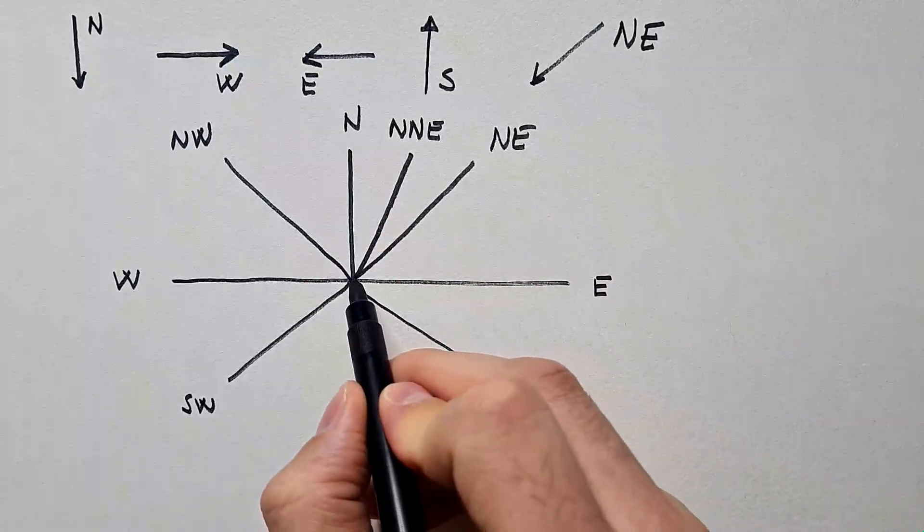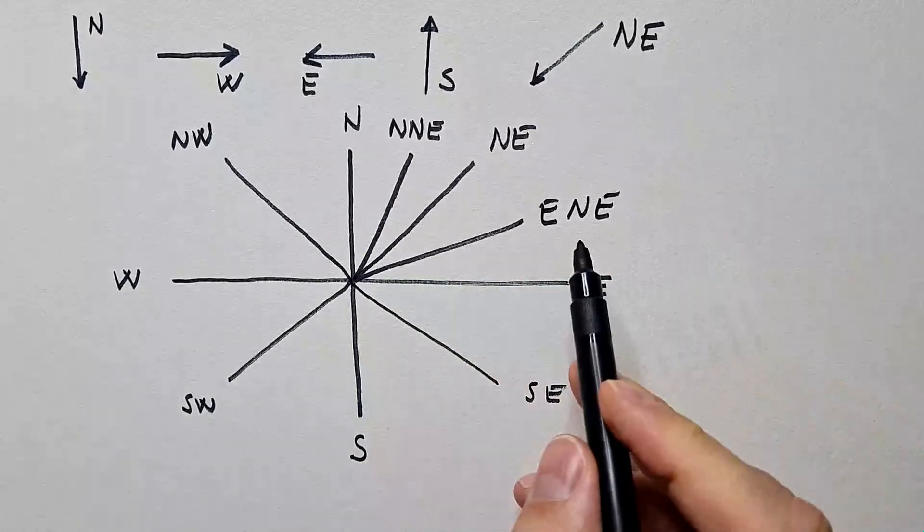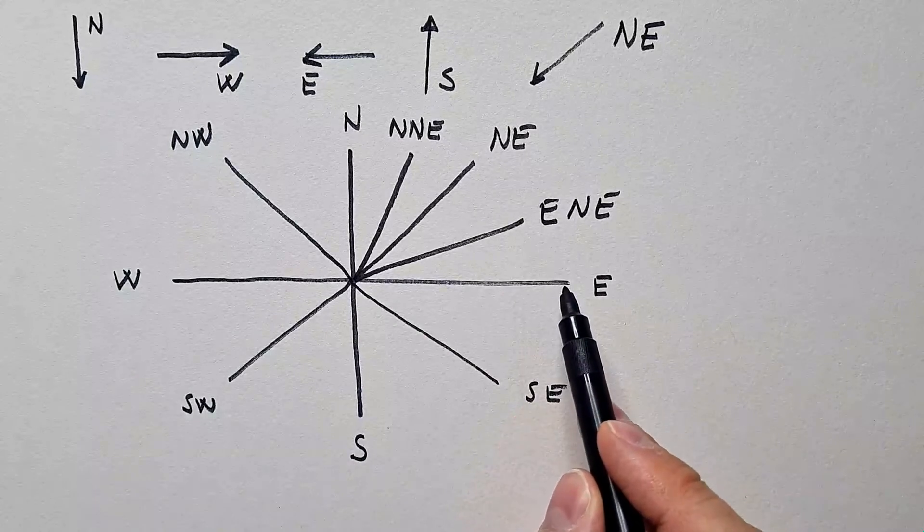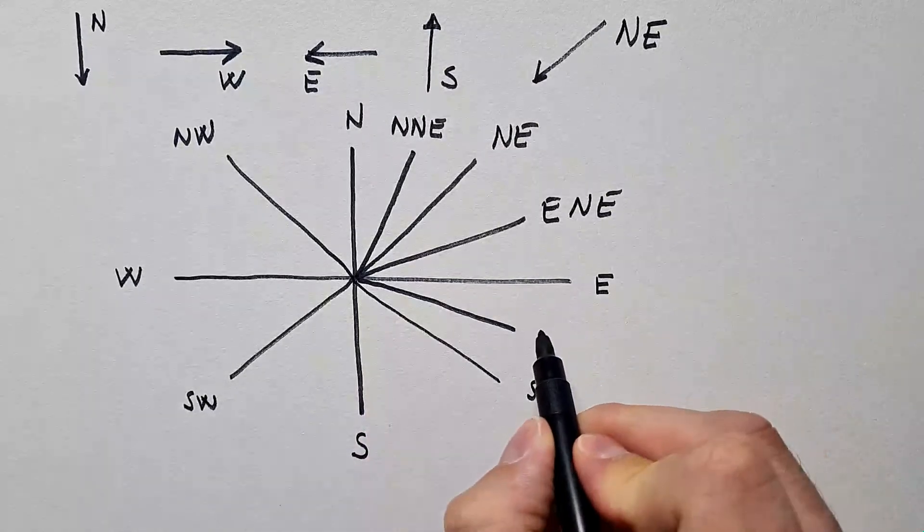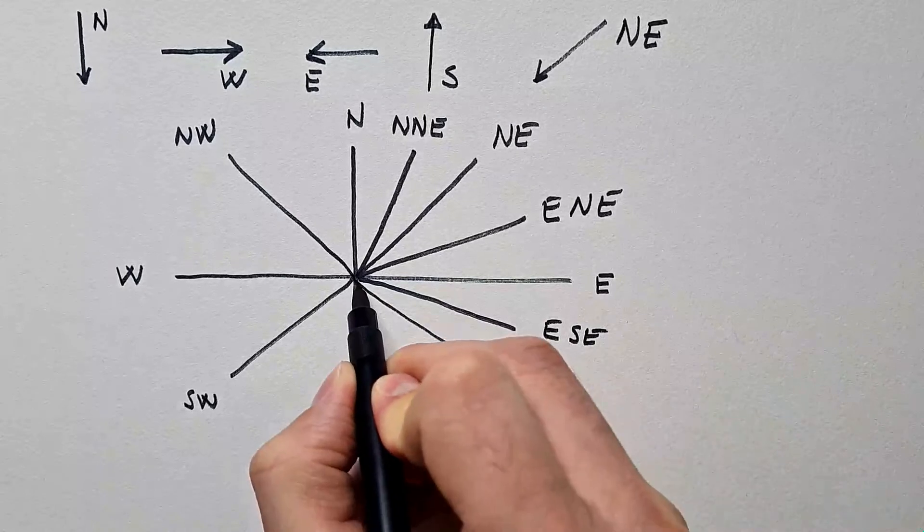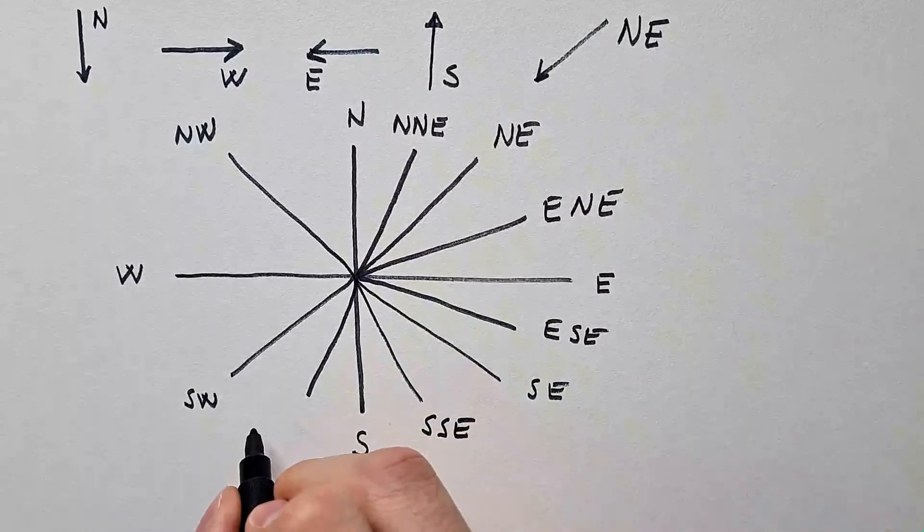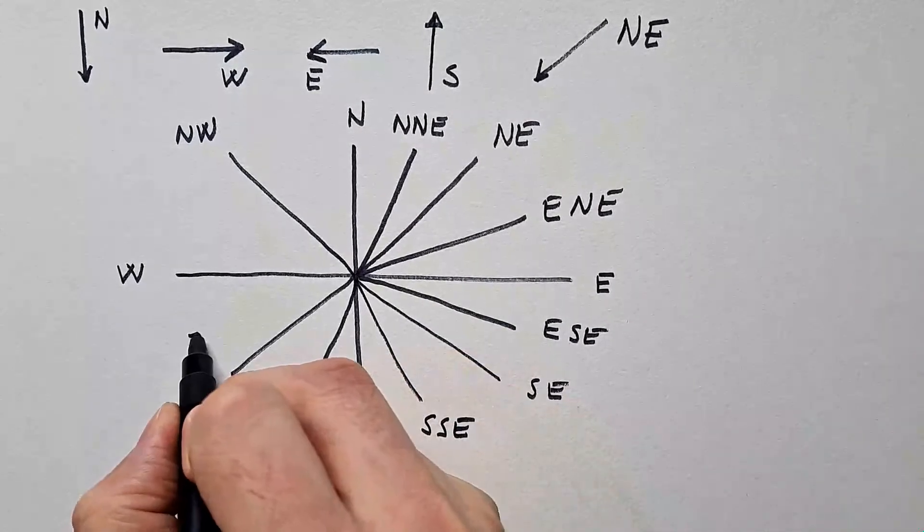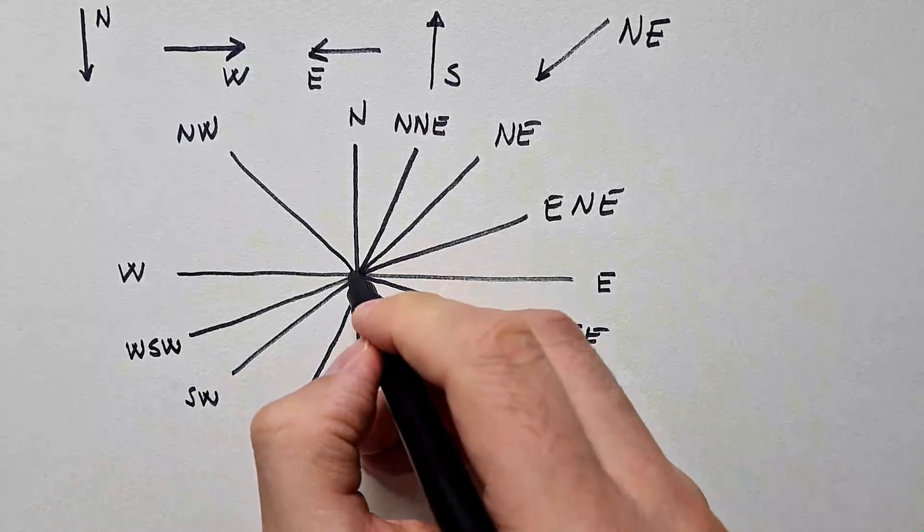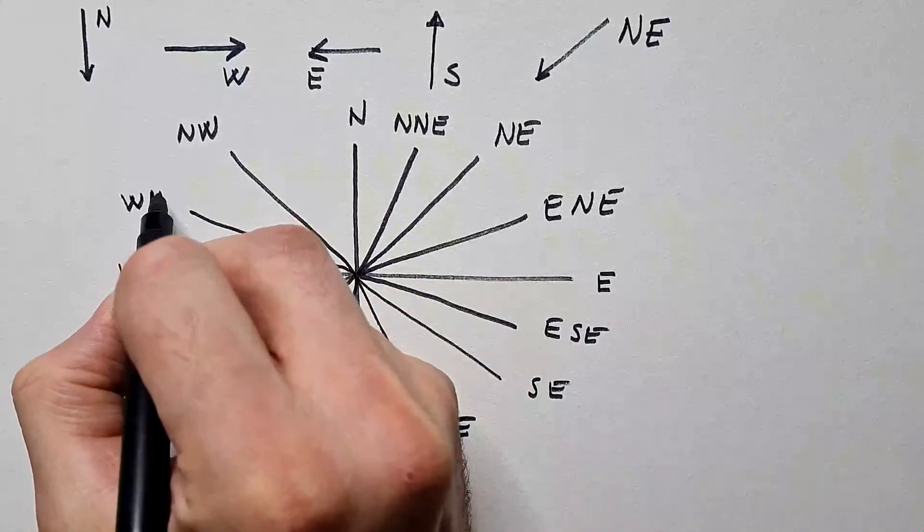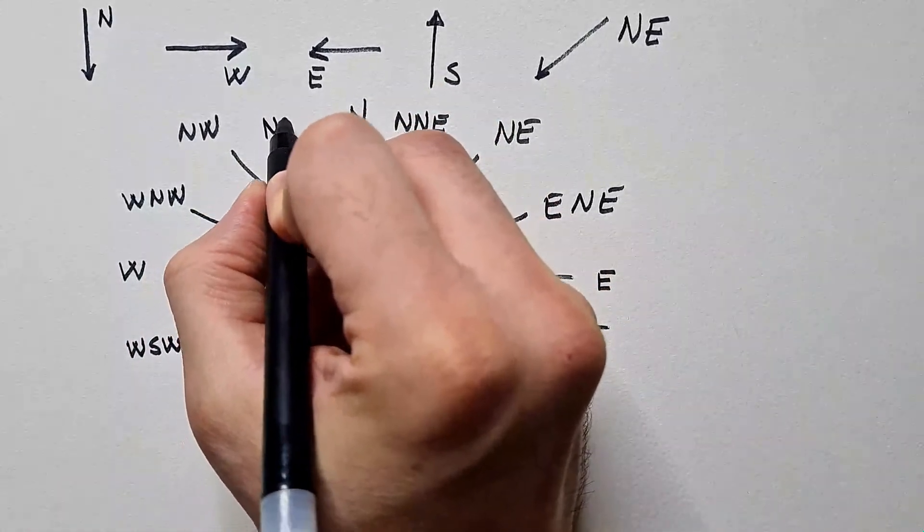And between northeast and east, we have east-north-east, which indicates, of course, that this direction is closer to east than it is to north. And similarly, here is east-south-east. And here is south-south-east. Here is south-south-west. And over here is west-south-west. Finally, final two, here is west-north-west. And at the end, we have north-north-west.